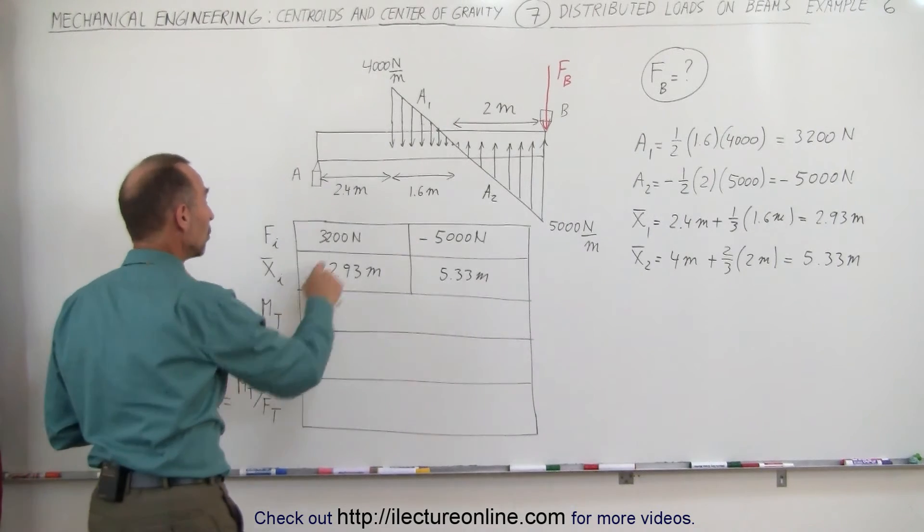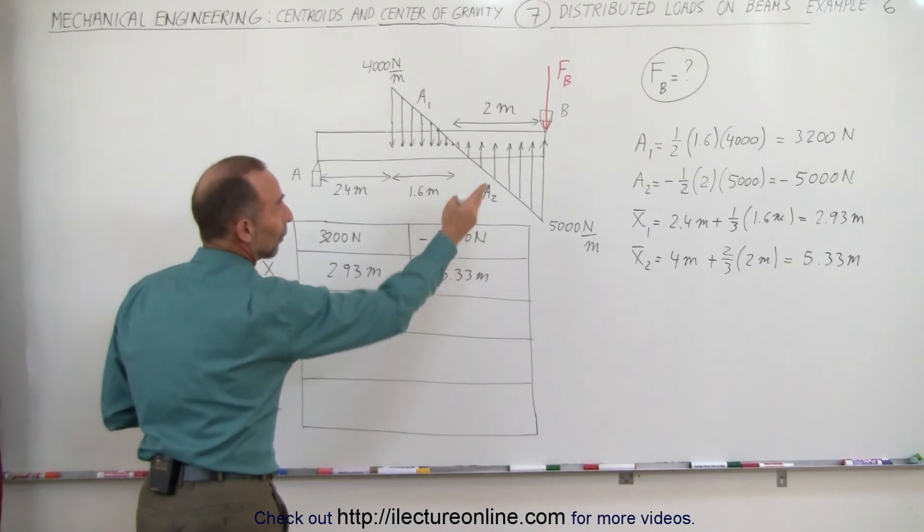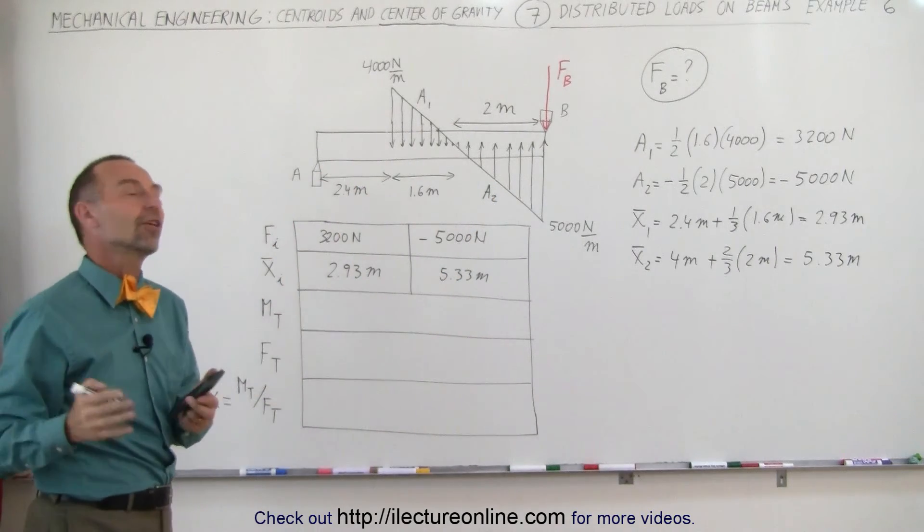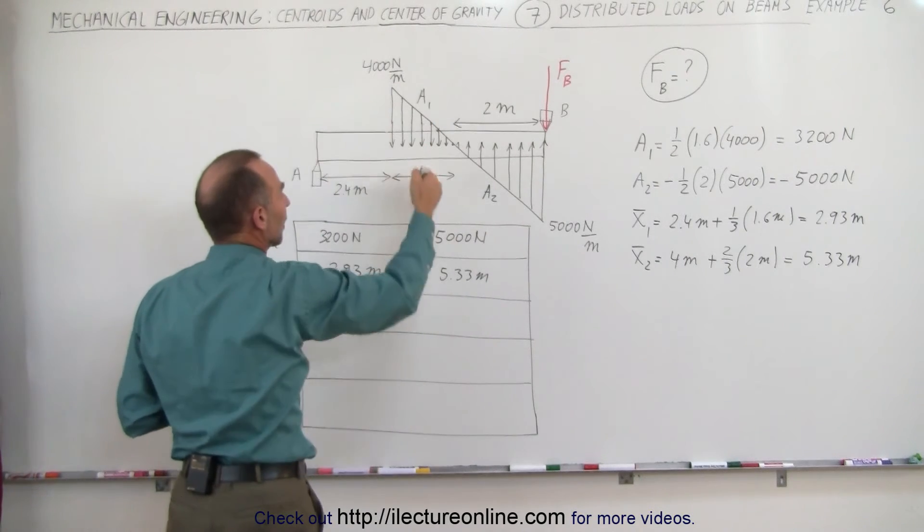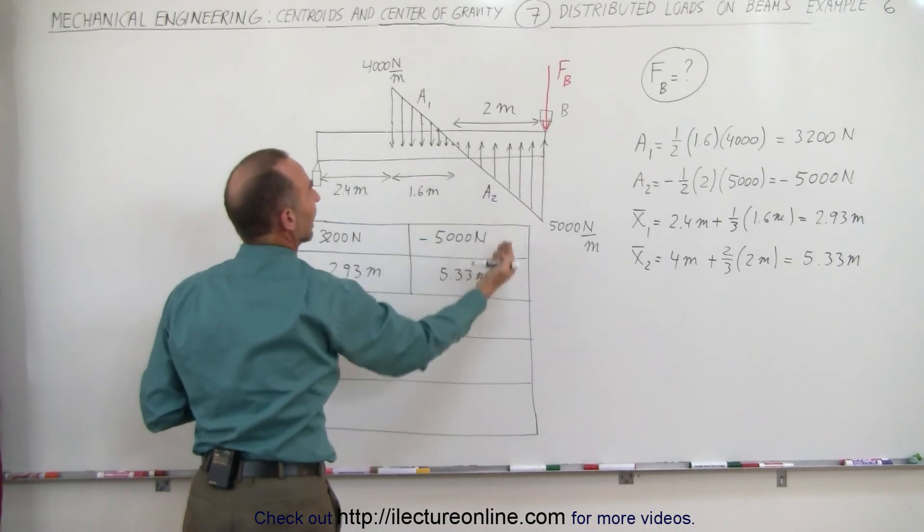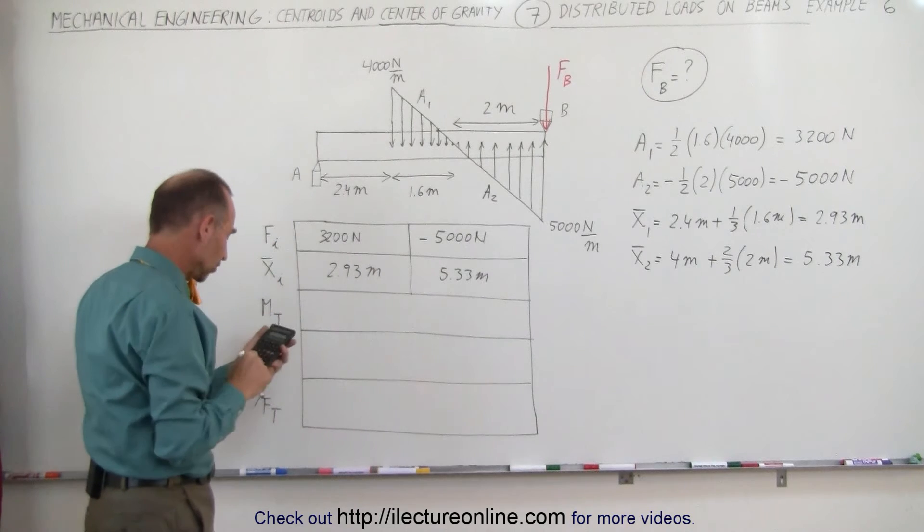Now to find the total moment, we multiply these together. Notice that this will give us a negative moment relative to point A. We have this as a positive load, this is a negative load, and we do it relative to point A.